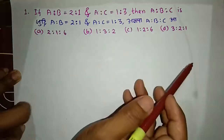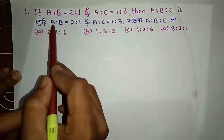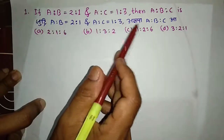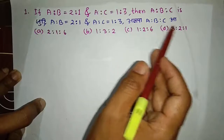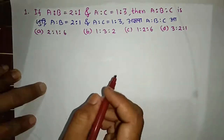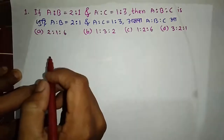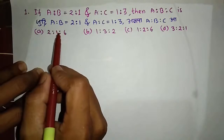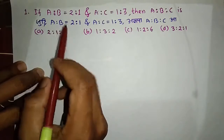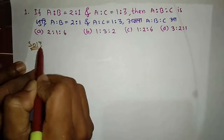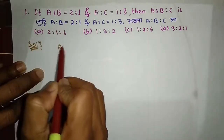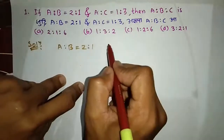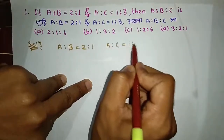A to B to C is 2 to 1 and A to C is 1 to 3. We can find A to C as 1 to 3.